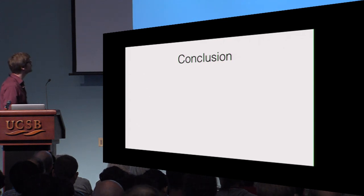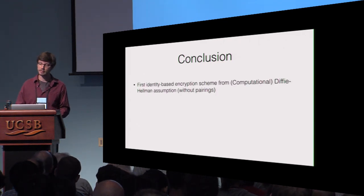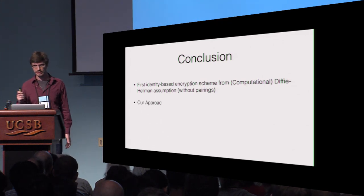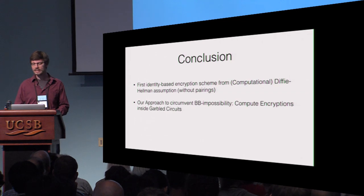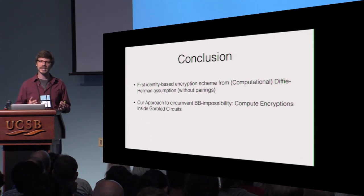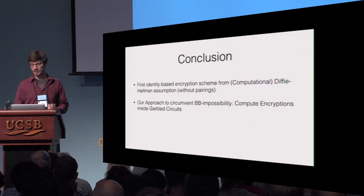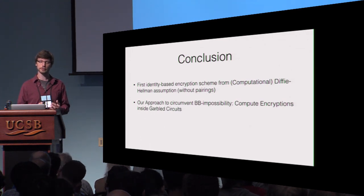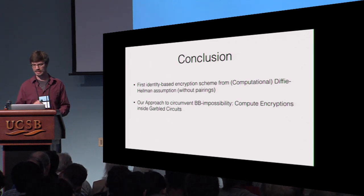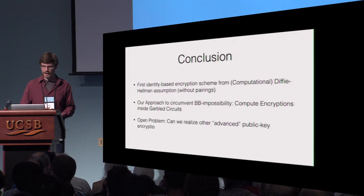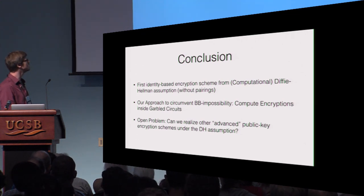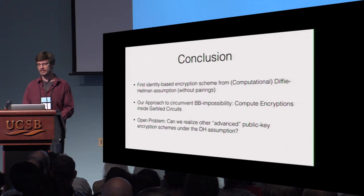To wrap up: I've shown you the first identity-based encryption scheme from the computational Diffie-Hellman assumption without pairings. The key ingredient used to circumvent the black-box impossibility results were garbled circuits — in particular, we evaluated cryptographic encryption functions inside garbled circuits. As a final open problem: can we realize other advanced public key encryption schemes under the Diffie-Hellman assumption, perhaps using similar techniques?